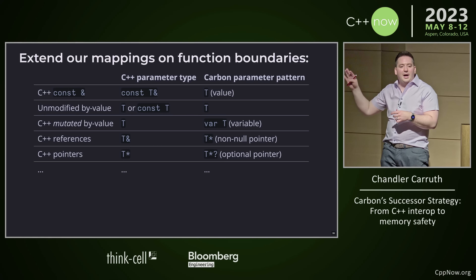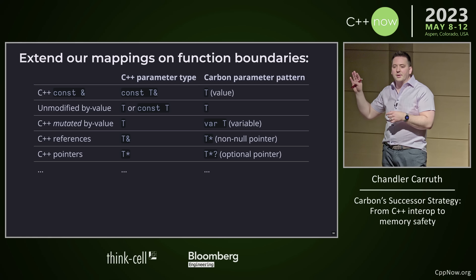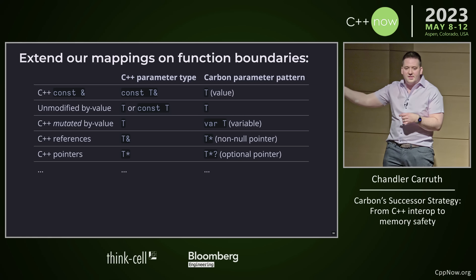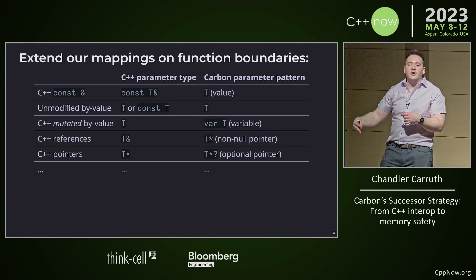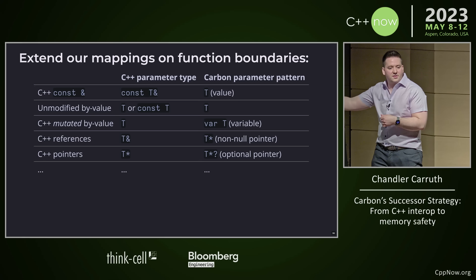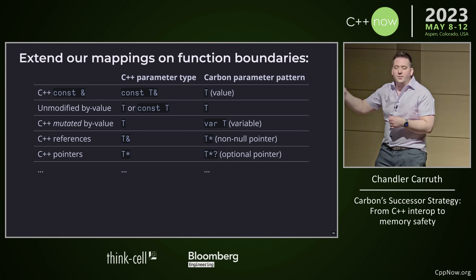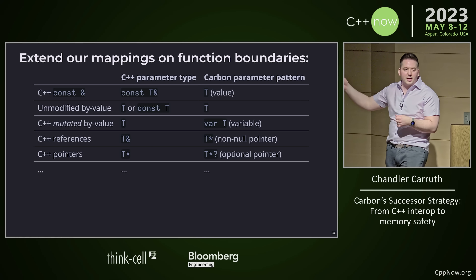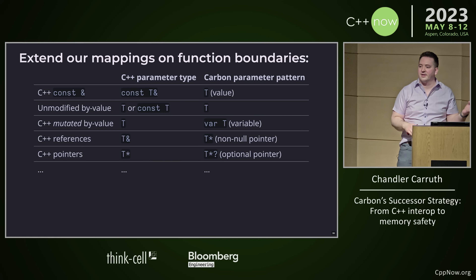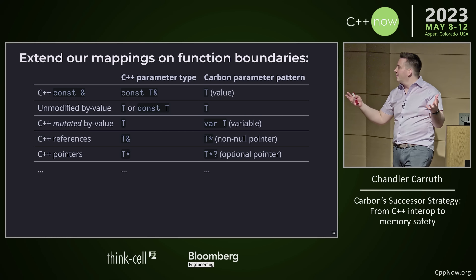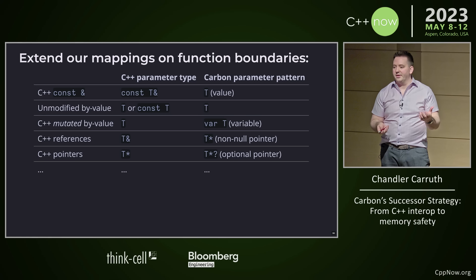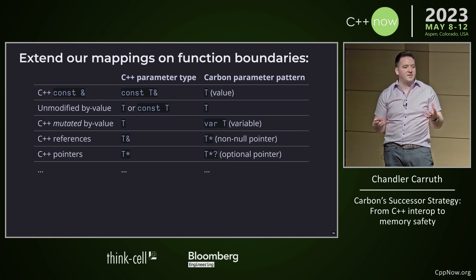We're going to model nullable pointers as a different type that tracks the nullability of the pointer and gives you a more direct API for controlling that. With all these things, we've got a nice mapping of the different parameters. We know how to take a C++ API and transform it into a Carbon API and vice versa. We need to know how to do this parameter passing, and we need the primitive building block types — those are the components that let us build interop.